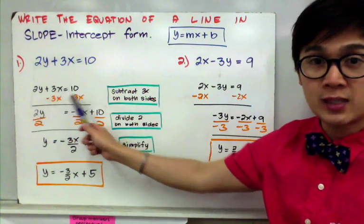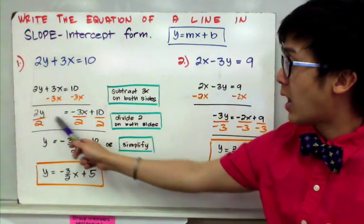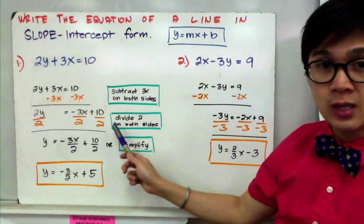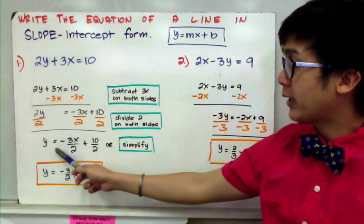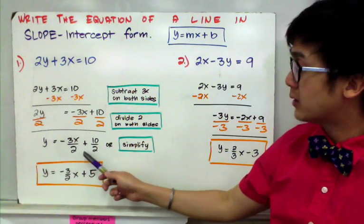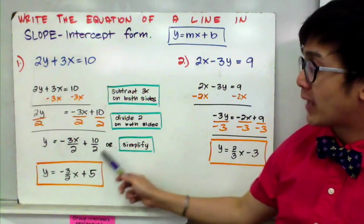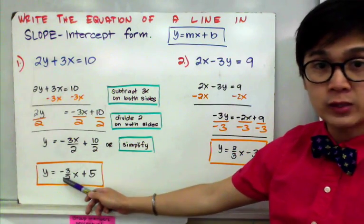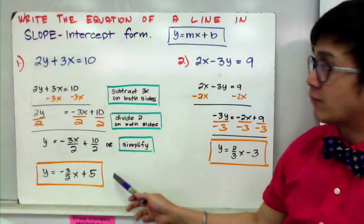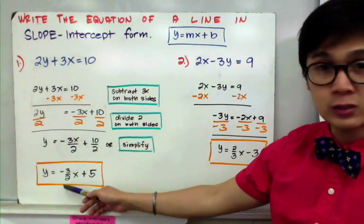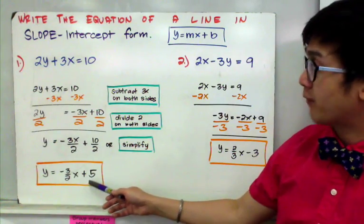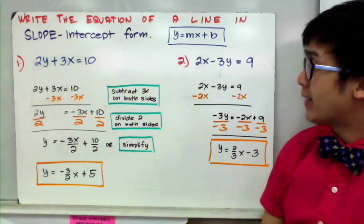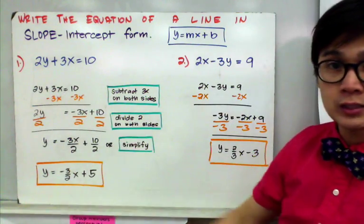We get rid of 3x by subtracting 3x on both sides, giving us 2y equals negative 3x plus 10. Since y is still with 2, we divide all terms by 2, ending up with y equals negative 3x over 2 plus 10 over 2. Simplifying the fraction gives us y equals negative 3/2 x plus 5. The slope is negative 3/2 and the y-intercept is positive 5. That is how we convert a standard equation to slope-intercept form.